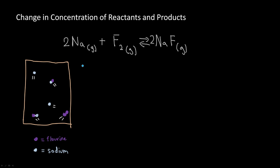Now let's look at how the equilibrium shifts as we change the concentration of reactants and products. We're using the same chemical equation, which is at equilibrium — meaning the rate of the forward reaction equals the rate of the reverse reaction. Let's look at the visual representation and determine what happens as we add and remove reactants.